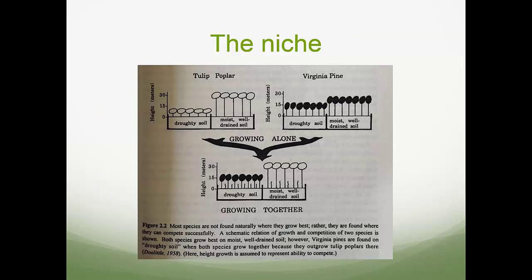This example is from Oliver and Larson. We see two southern species — tulip poplar and Virginia pine. When growing alone, tulip poplar doesn't do well on droughty soils but does really well on moist, well-drained soils. Virginia pine does okay on droughty soils and a little better on moist, well-drained soils. Both species grow better on moist, well-drained soils.